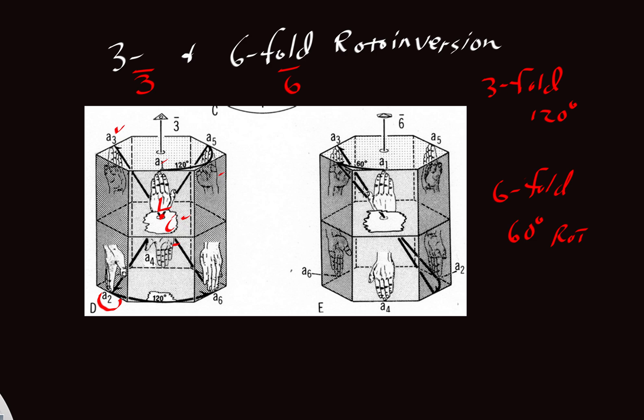So same concept here with the bar six. We're going to start with A1, rotate it 60 degrees. Notice that that's going to take us to this blank panel here. That would be where our imaginary hand would take a momentary rest stop, but we're not done. We would invert that fellow through this inversion point here to get A2.